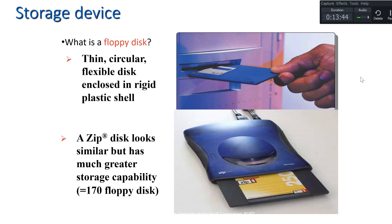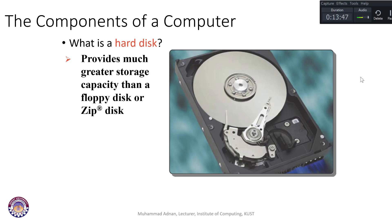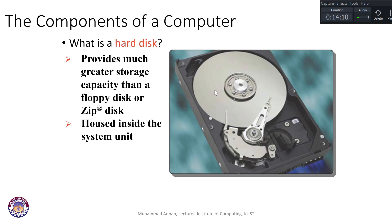Nowadays you have online storage in the form of Dropbox, Google Drive, and OneDrive, which are very reliable. One of the most important storage devices is the hard disk. Inside, it has circular plates and a head: the plates rotate clockwise or anti-clockwise and the head moves to and fro to read or write data. Hard disks provide much greater storage capacity than floppy or zip disks and are permanently housed inside the system unit.